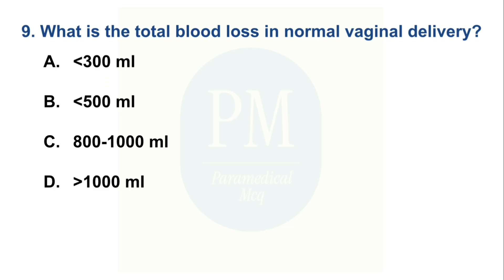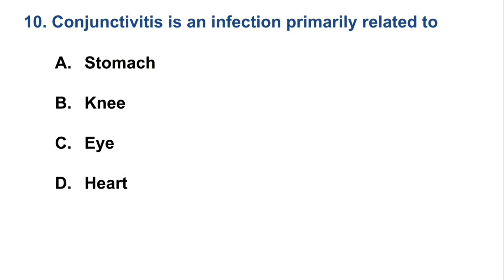The correct option is Option B, less than 500 ml. An infection primarily related to: Option A: Stomach, Option B: Knee, Option C: Eye, Option D: Heart. The correct option is Option C, Eye.